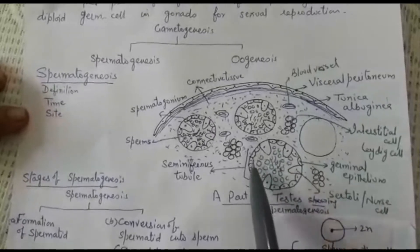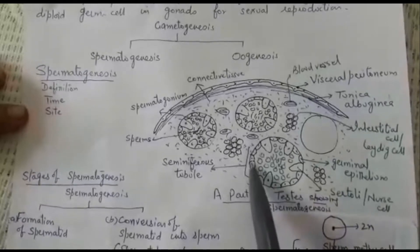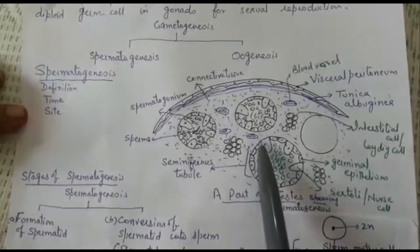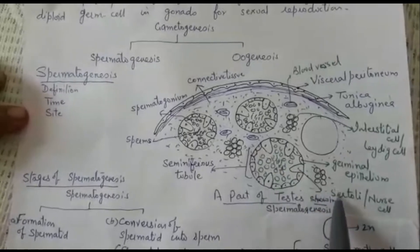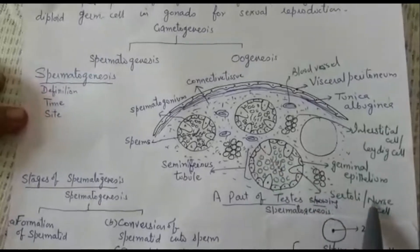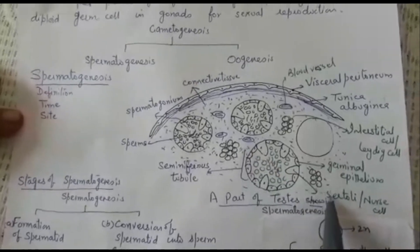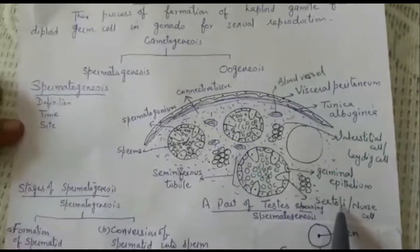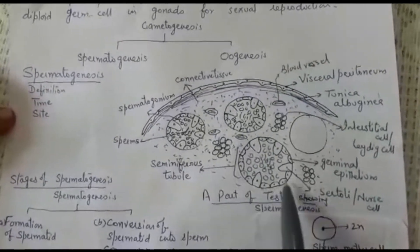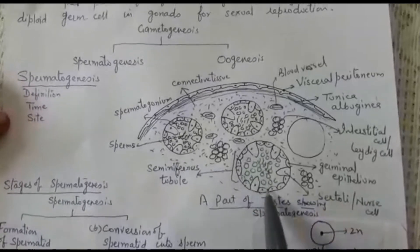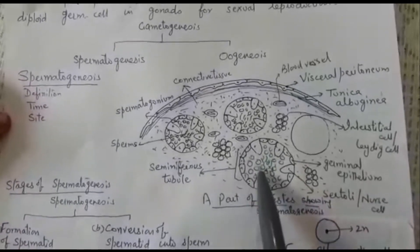The process of spermatogenesis occurs within the seminiferous tubule, which is lined by germinal epithelium. Here you can see sperm mother cells and large-sized cells known as Sertoli cells or nurse cells, which mainly provide nourishment to the developing sperms.